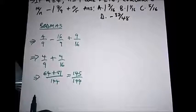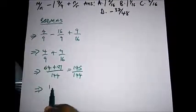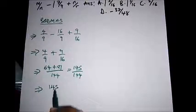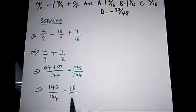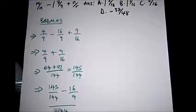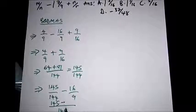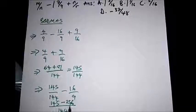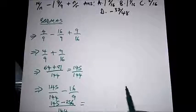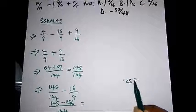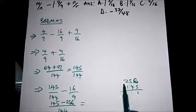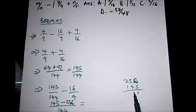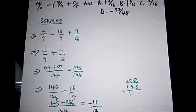Now let's perform subtraction, which is our next operation. We have 145 over 144 minus 16 over 9. The LCM is 144. 144 over 144 is 1 — 1 times 145 gives 145. 9 goes into 144 sixteen times — 16 times 16 is 256. So we have 145 minus 256 over 144, which carries a negative sign. Subtracting: 256 minus 145 gives 111, so we have negative 111 over 144.